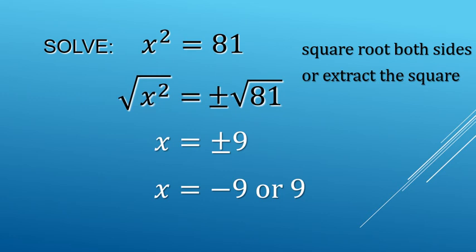So we're going to have two values for the variable that make the equation true. Here we go. Negative 9 squared, which is negative 9 times negative 9, makes a positive 81. Or 9 squared, 9 times 9 also makes 81. Two values for the variable that make the equation true.